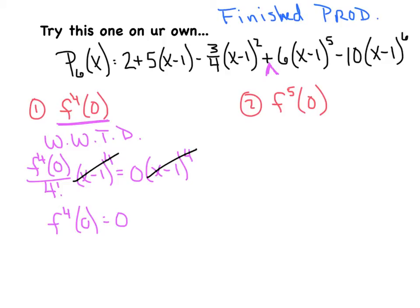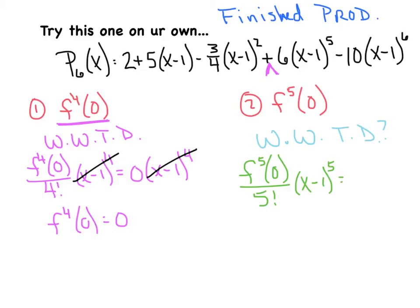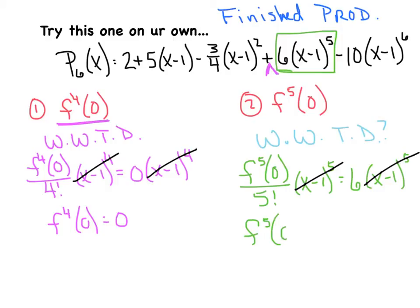Now let's tackle the fifth derivative — this one is more intriguing. What would Taylor do? The fifth derivative evaluated at one divided by five factorial times x minus one to the fifth. Set that equal to the given term in the finished product. Those x minus one to the fifth quantities cancel, and cross-multiplying gives the fifth derivative evaluated at one equal to six times five factorial. Five factorial is 120, and six times 120 is 720.